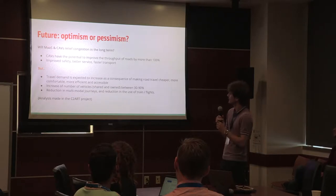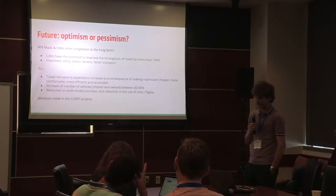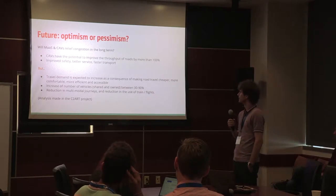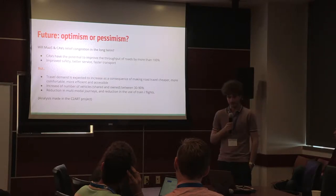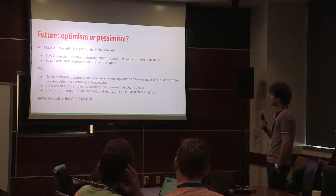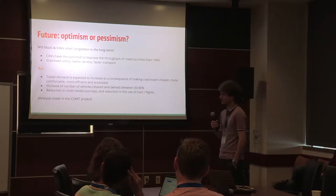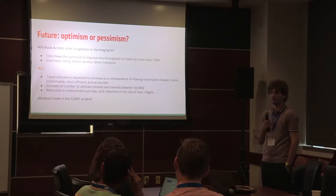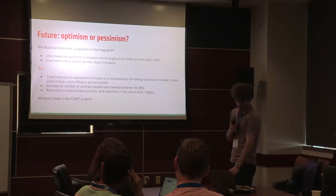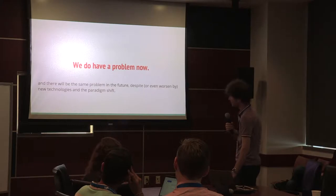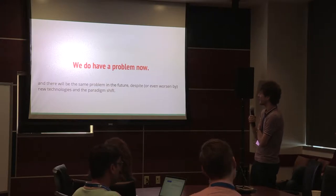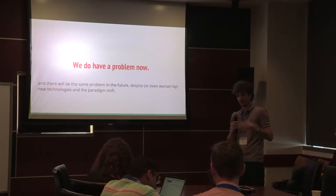Projections suggest a 30 to 90% increase in vehicles over the next 10 years — potentially doubling the number of vehicles already on our roads, basically destroying any benefit gained from autonomous cars. There's also a reduction in multimodal journeys: if vehicles are cheap and comfortable to use, why take a train or bus? So we have a problem now, and it's very likely the same problem will persist in the future, if not get worse.